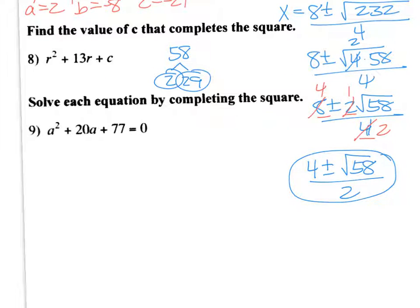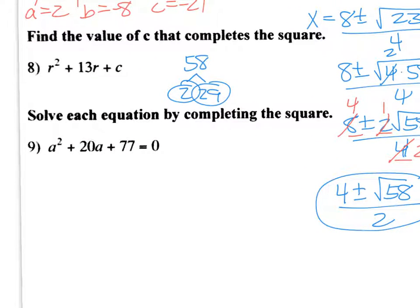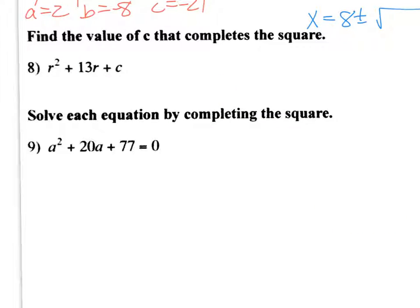Next, find the value of C that completes the square. So in this one, remember what we did? We did half. So we took the middle term with its sign, divided it by 2. And we said if you get a fraction, leave it a fraction. So positive 13 over 2. And then we square that. Again, leave it as a fraction. When you square that, you get 169 over 4. And that is our C. So that's the value to complete the square.